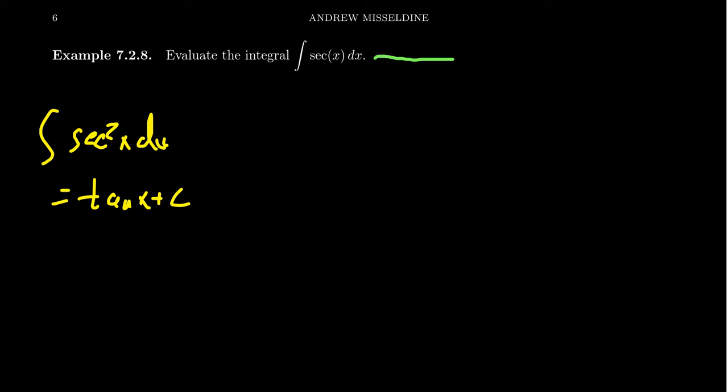So what we're going to do is very cleverly multiply by a strategic number one. We're going to multiply the top by secant x plus tangent x, and then we have to do the same thing to the bottom, secant x plus tangent x. So we're going to times the top and bottom by that. And it's like, well, why would we do that? Well, we're going to see in a moment why this is fruitful.